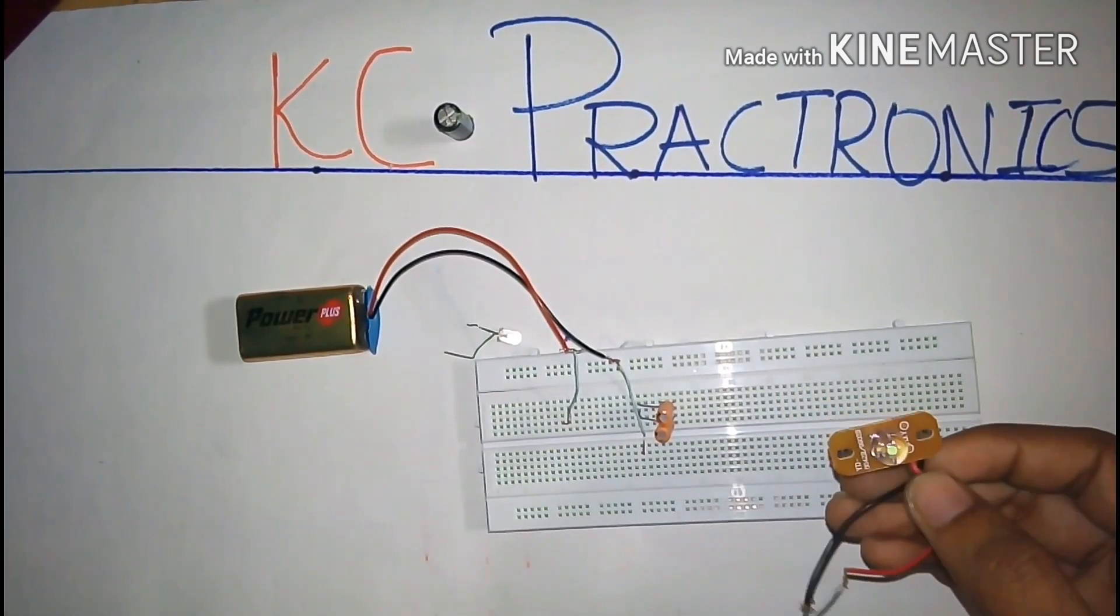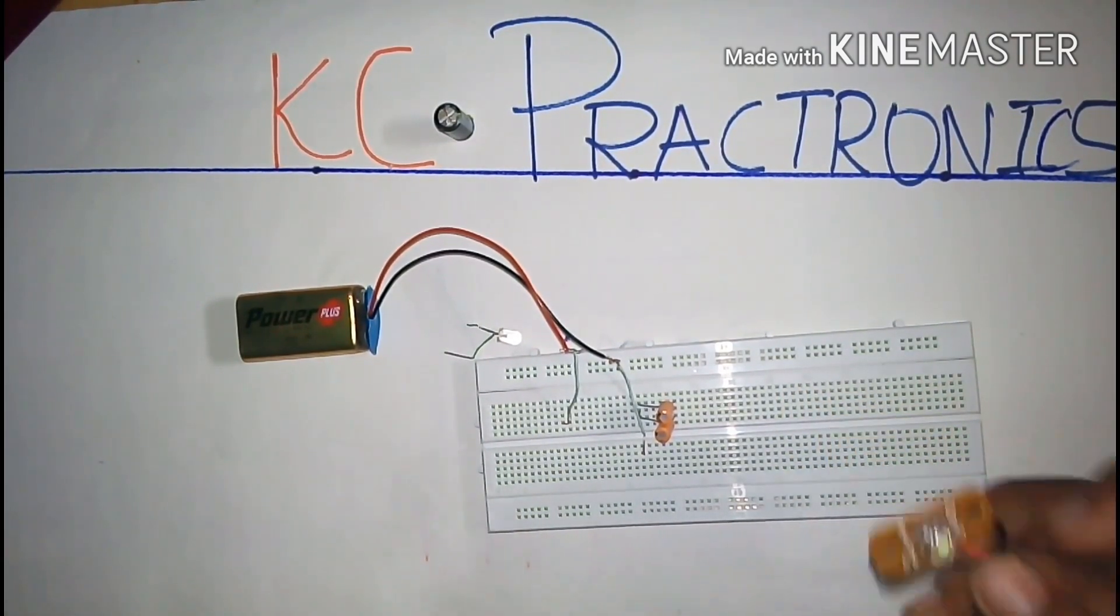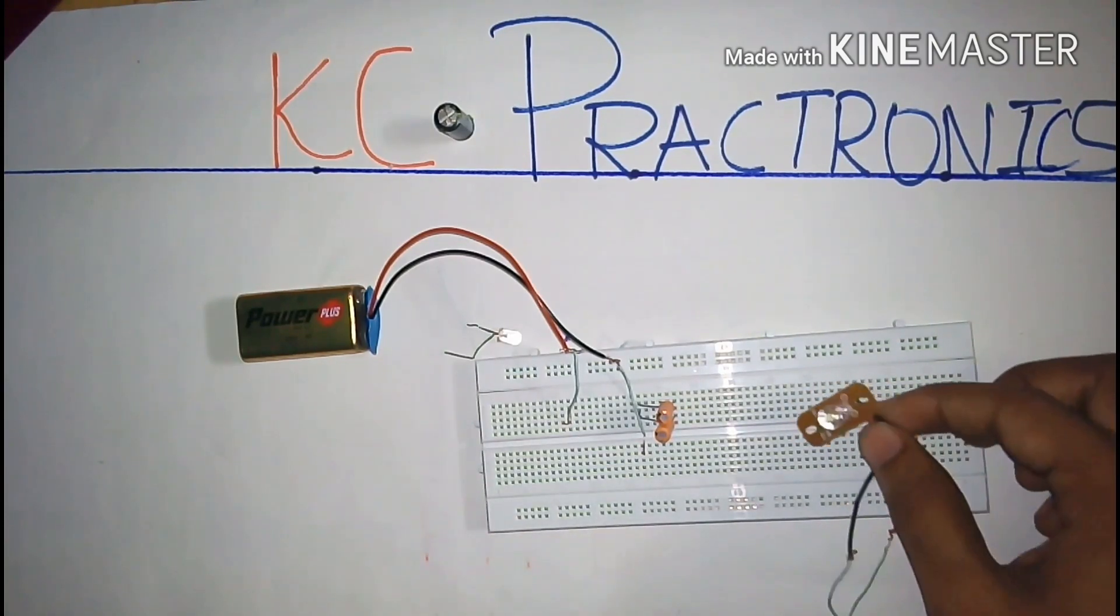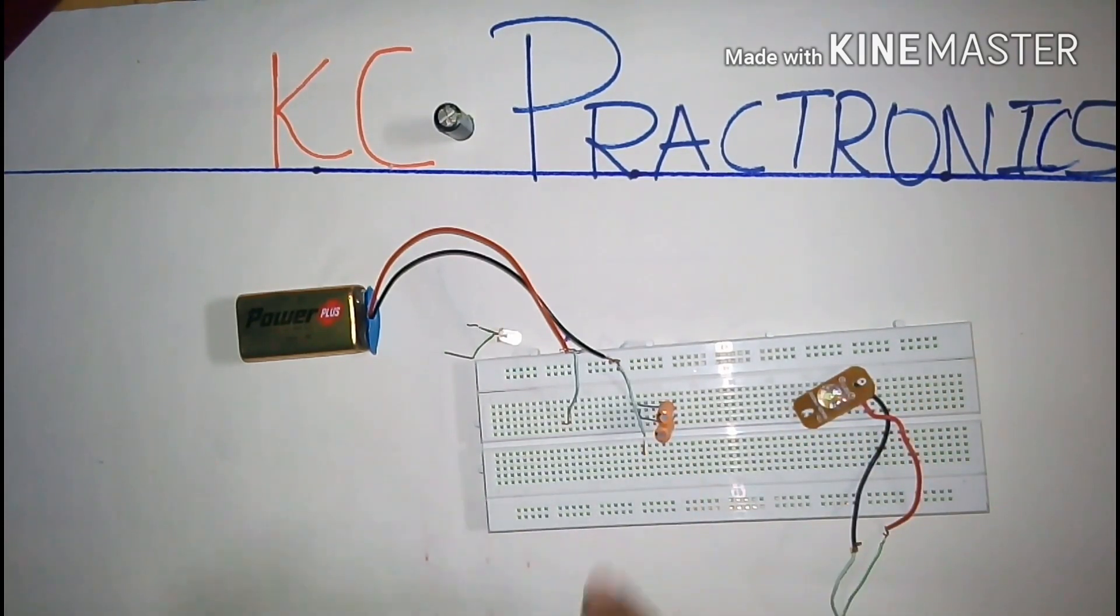As you observe, the LED glows for an instant of time and the intensity of the light decreases continuously. This is due to the discharging property of the capacitor.